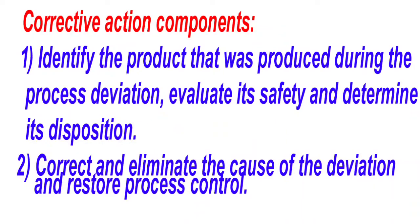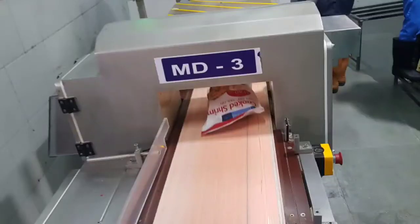Corrective actions still need to be taken when unanticipated situations arise. Corrective action has two components. The first component is to identify the product that was produced during the process deviation, evaluate its safety, and determine its disposition. The second component is to correct and eliminate the cause of the deviation and restore process control.